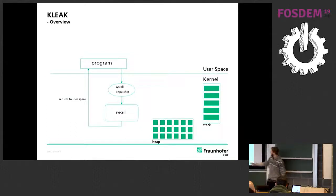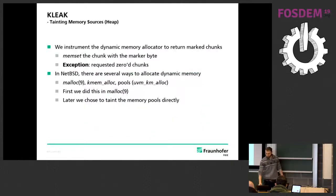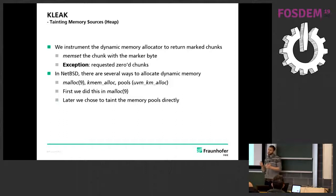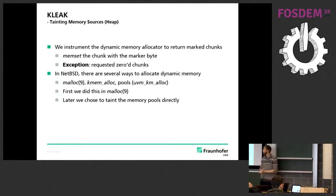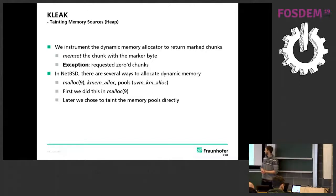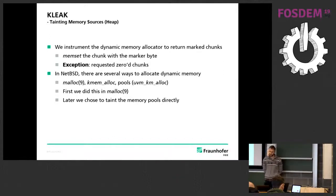Let's go into the details. For our data sources, one source is the heap. We instrument the dynamic memory allocator to return marked chunks — we memset the chunks before returning them. So if you call malloc, we return the requested memory memset with our marker byte rather than uninitialized. The exception is zero-sized chunks — if you request those we have to return zero because otherwise you get kernel panics.